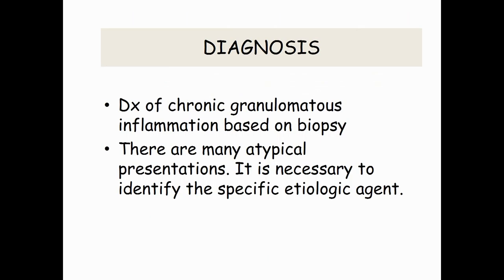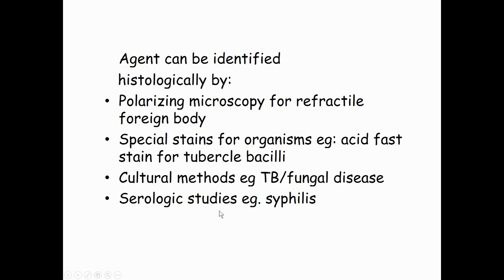Diagnosis of chronic granulomatous inflammation is based on biopsy. There are many atypical presentations, and it is necessary to identify the specific etiologic agents. Agents can be identified histologically by polarizing microscopy for refractive foreign bodies, special stains for organisms — for example, acid-fast stain for tuberculous organisms — and culture for tuberculosis and serological studies for syphilis.